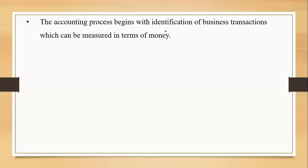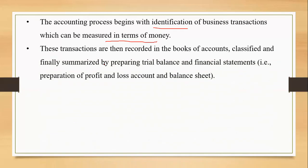The accounting process begins with the identification of business transactions which can be measured in terms of money. This is a basic step — whenever a transaction takes place, the first thing we need to identify is whether it is of economic nature, whether money is involved or not.